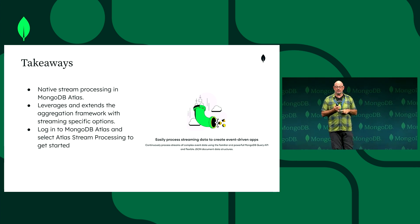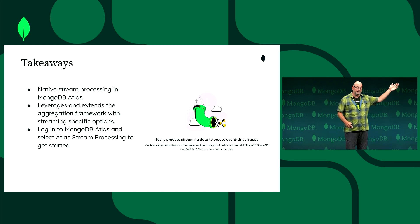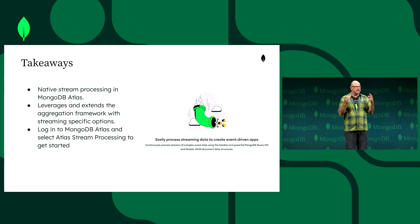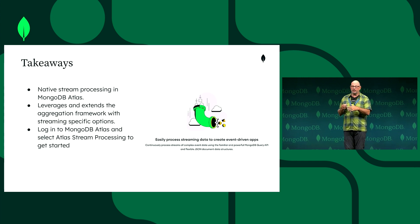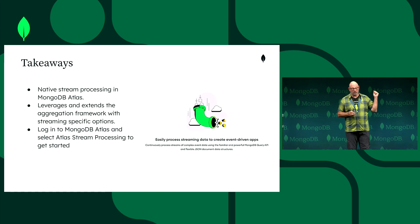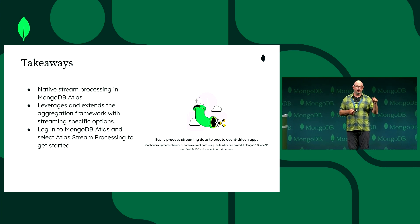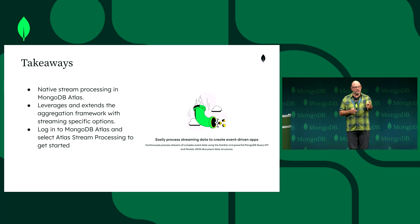We've added native stream processing to Atlas. The keyword is continuous — we continuously run queries, processing data from source to sink. The source can be change streams or Kafka; Kinesis is coming. The sync could be Kinesis, Kafka, or MongoDB. It leverages and extends the aggregation framework — if you're writing aggregation statements today, you're already a stream processor developer. You can try it tonight. Log in, get started, provision an instance, and give us feedback at community.mongodb.com/forums.